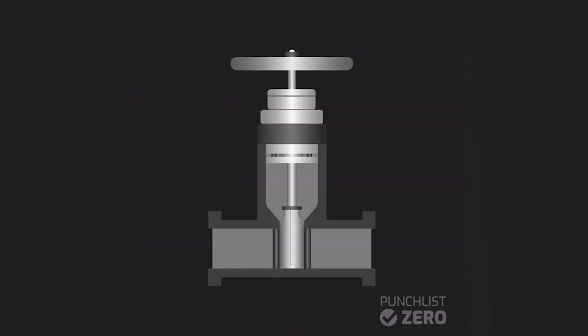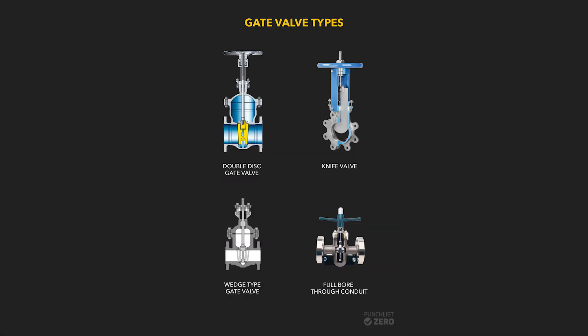The disc of a gate valve has different configurations depending on process requirements. Gate valves can be divided into groups based on their type of disc: double disc, knife, wedge, and full bore conduit.